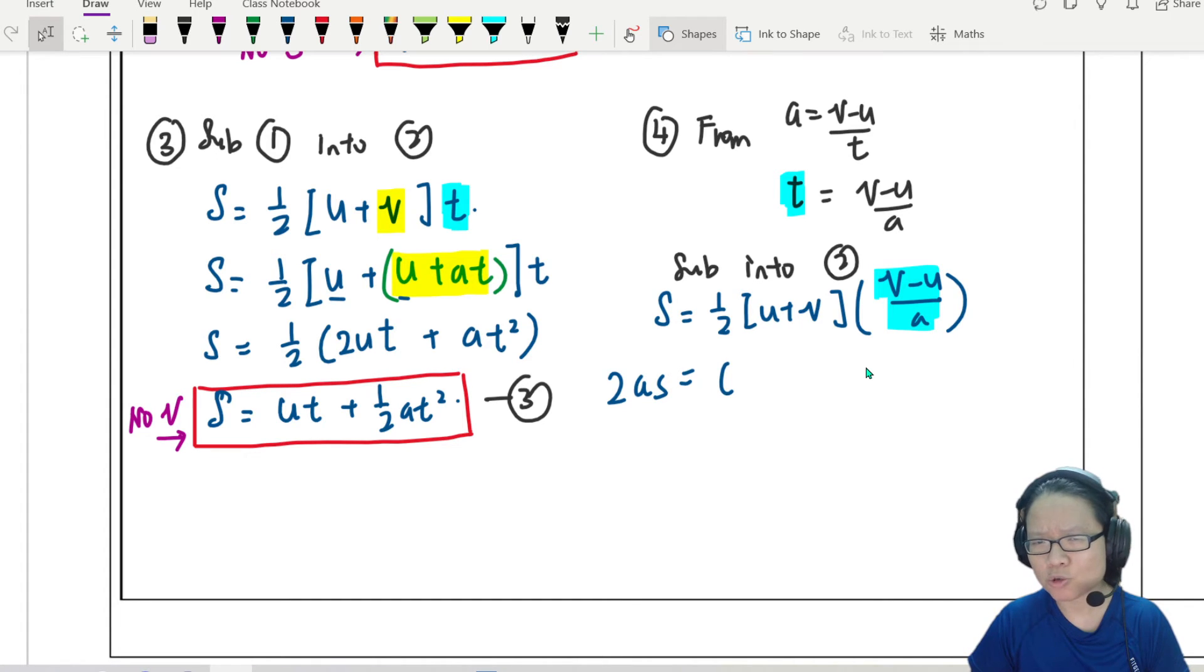Then here, I can rearrange v plus u, v minus u, a plus b times a minus b. What does that give you? Teacher, this one I know. I know algebra. It's v squared minus u squared. If you don't know, you can slowly expand. Take your time.